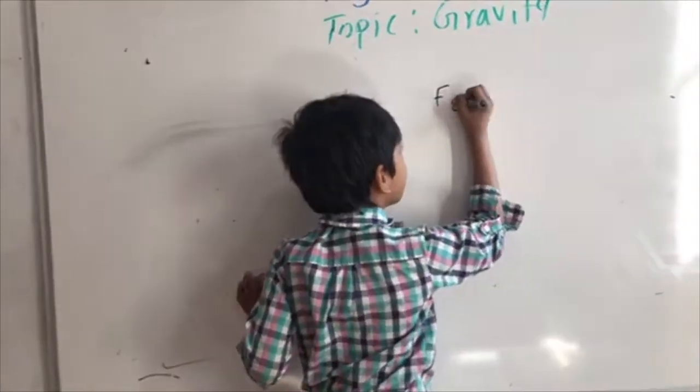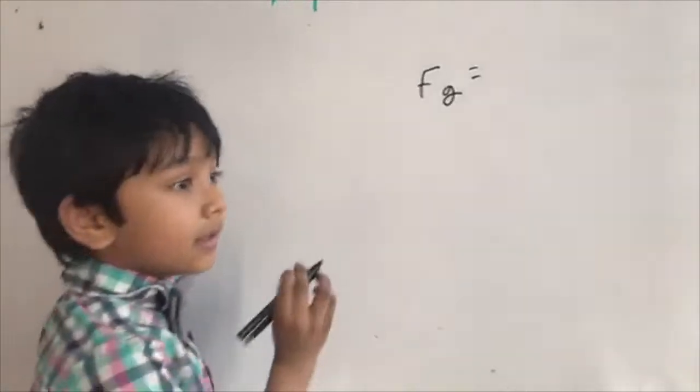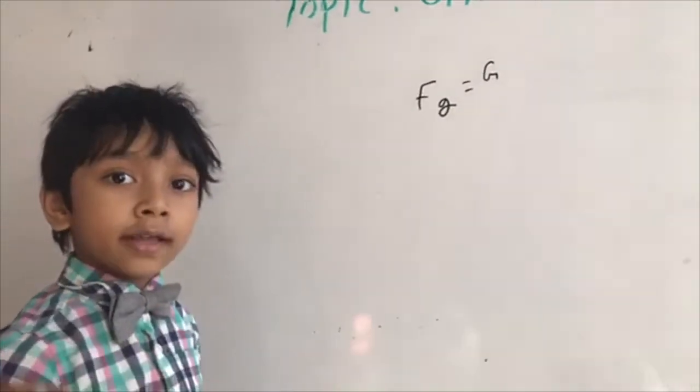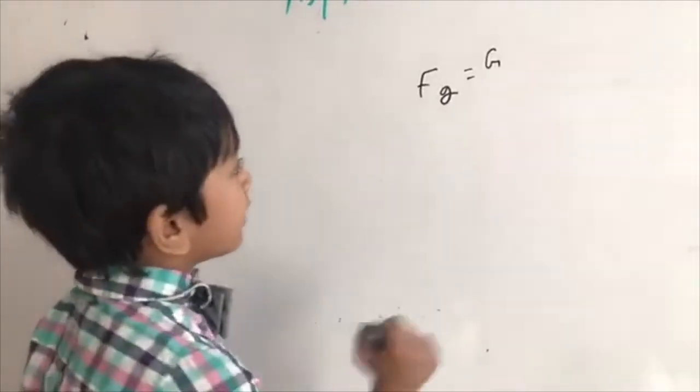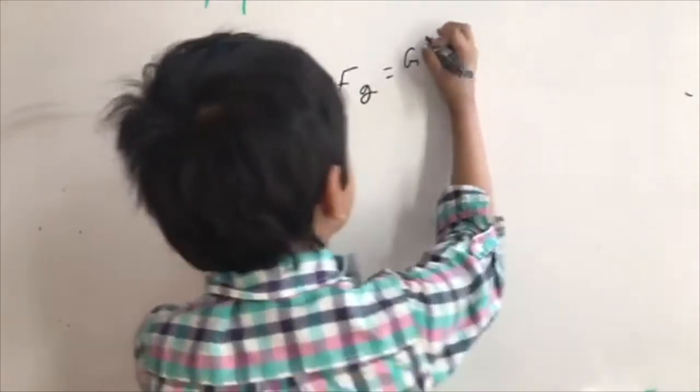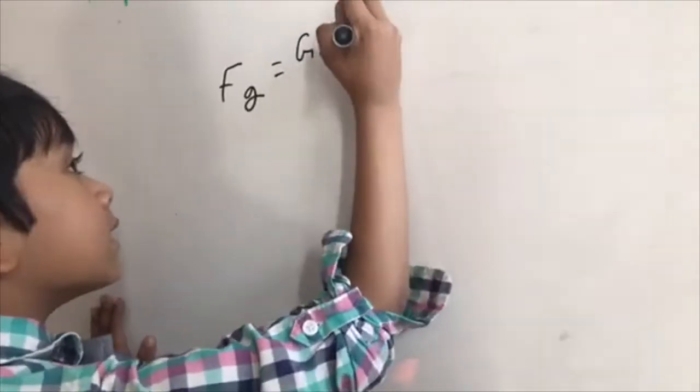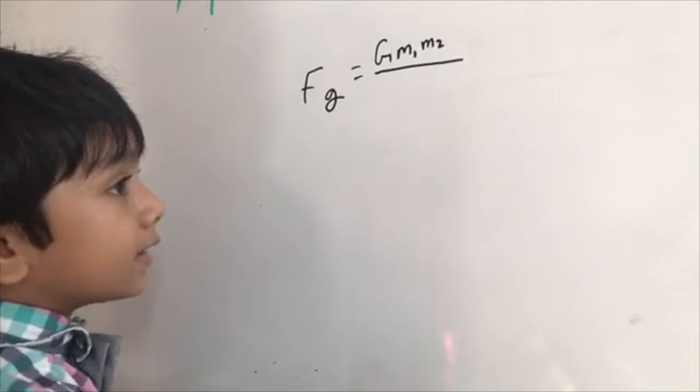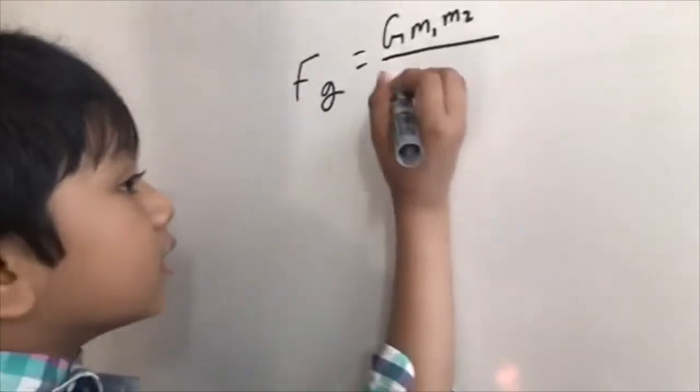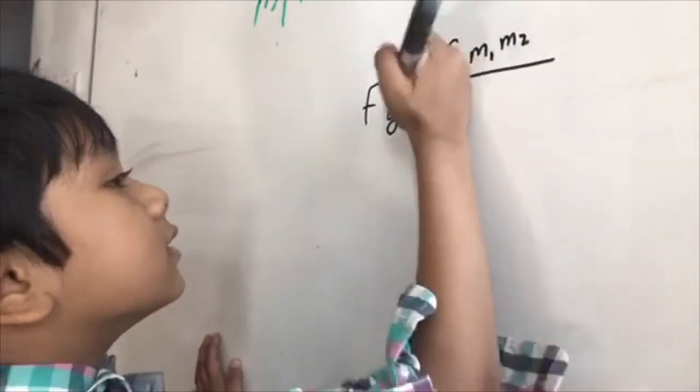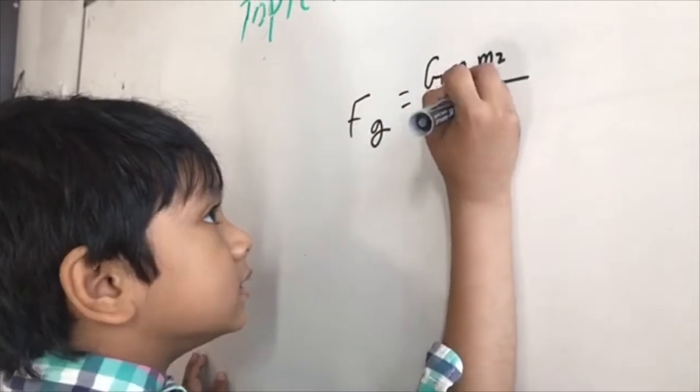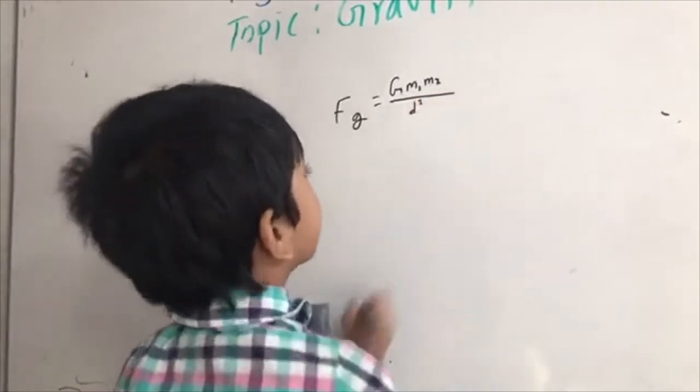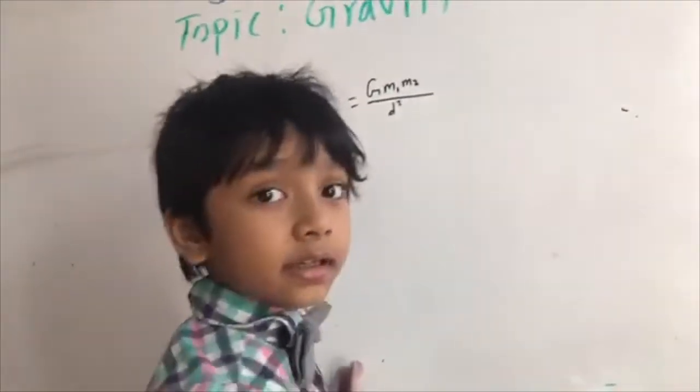The force of gravity is equal to the gravitational constant, or you can call it Newton's constant. The mass of one object and the mass of another object, divided by the distance squared, the distance between the two objects squared.